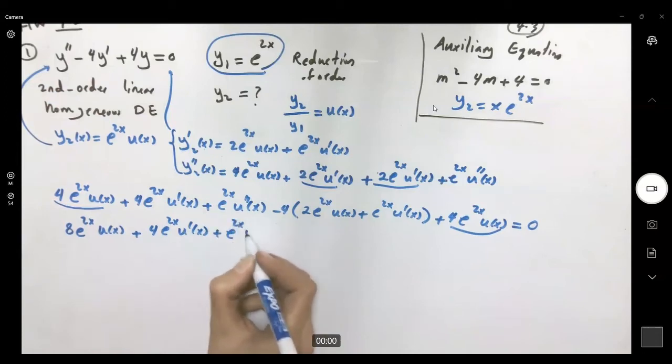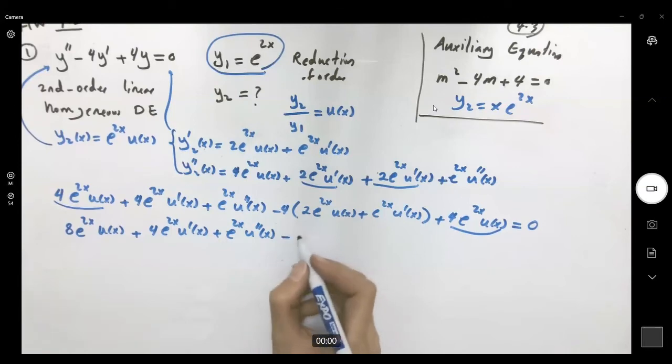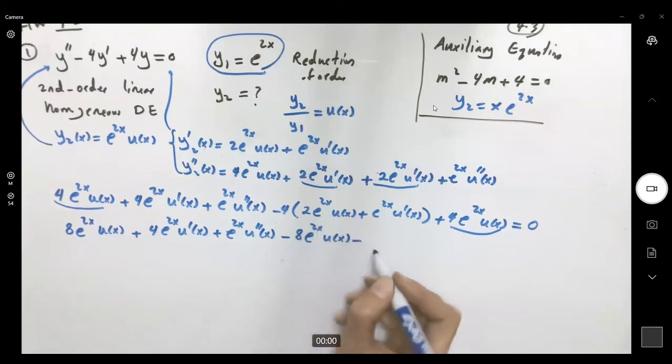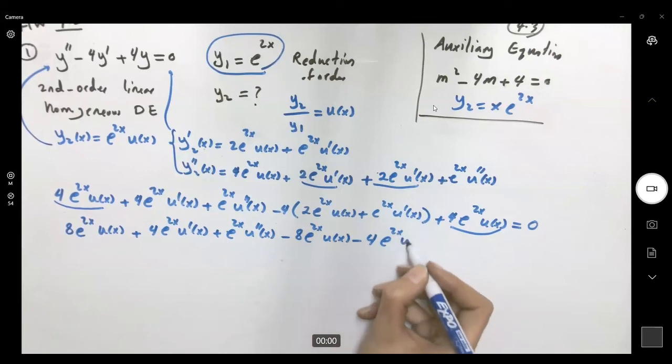Here we have e to 2x u double prime of x minus 8 e to 2x ux minus 4 e to 2x u prime of x which is equal to 0. So what do we have here?